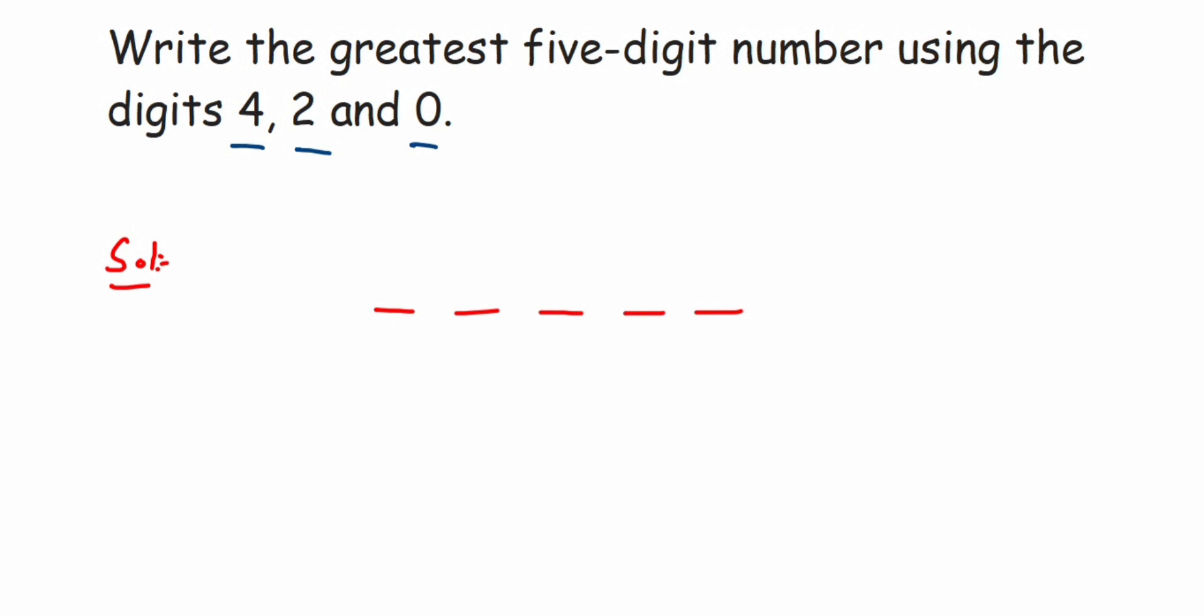Now what can come in the second place? The second place will also be a 4. Why 4? Because we have not been told that we should not repeat the numbers. Obviously we can repeat because only three digits are given here.